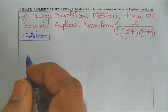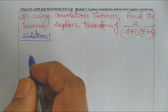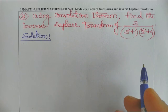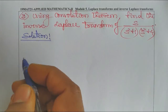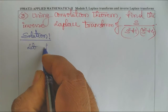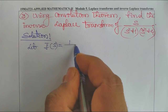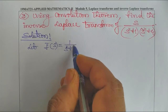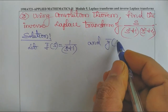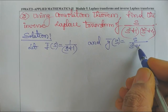The next problem is: using the convolution theorem, find the inverse Laplace transform of S divided by (S² + 1)(S² + 4). Let F̄(S) = 1/(S² + 1) and Ḡ(S) = S/(S² + 4).